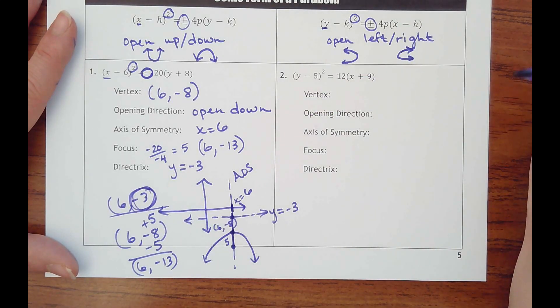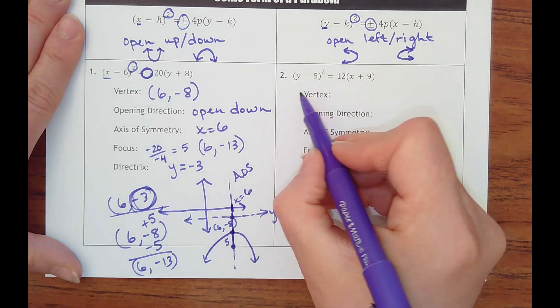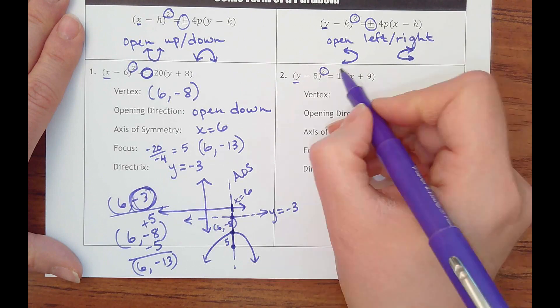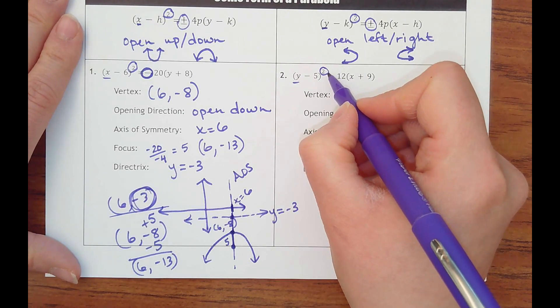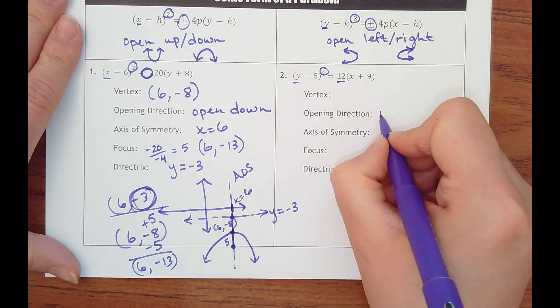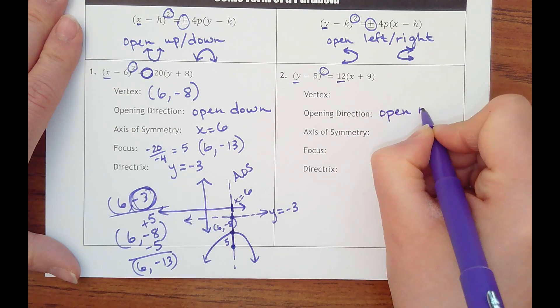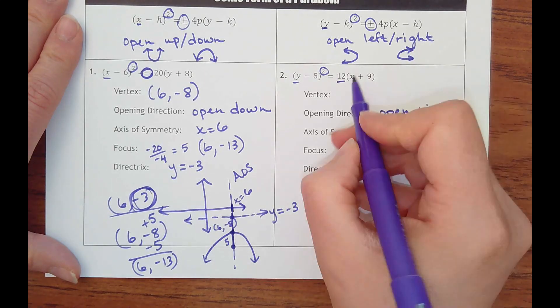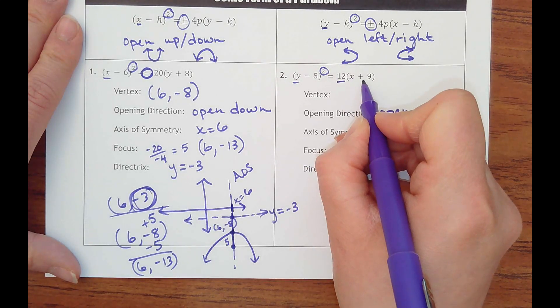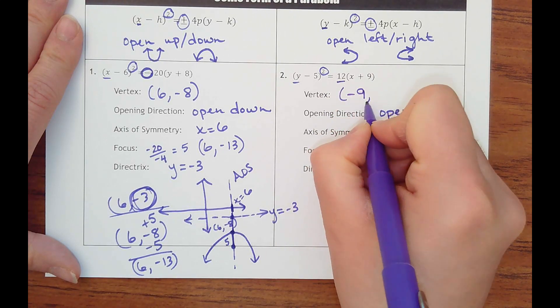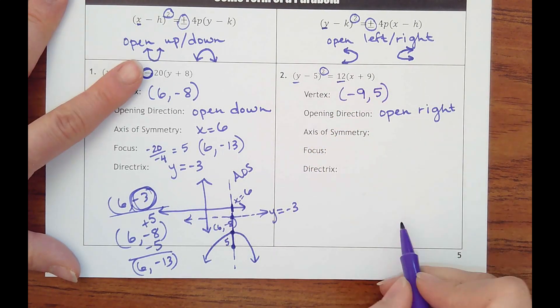Let's try another one. Number 2, we've got y being squared. So this is going to either open left or right, and this is positive. So we're going to say this is opening to the right. The vertex, we've got to start with the x-value, the h, comma k. So it would be negative 9, comma 5, and then I'm going to sketch it real quick.